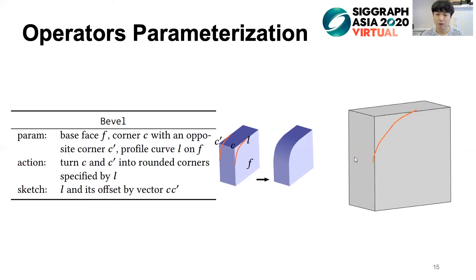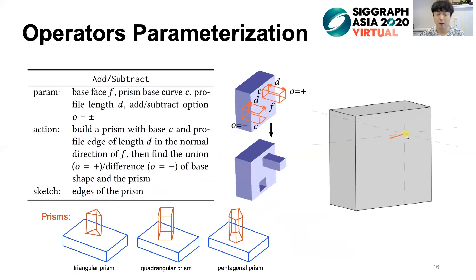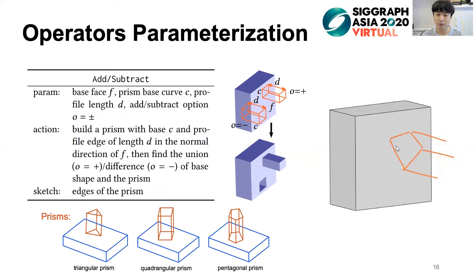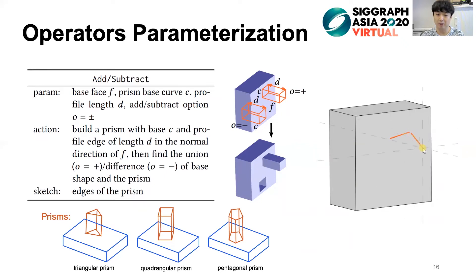For add and subtract, users directly draw the edges of the desired prism. Currently, we support triangular, quadrangular, and pentagonal prisms. Then we find the base-face f, prism base-curve c, profile length d, and subtract option o to apply this operator, as shown in the demo.